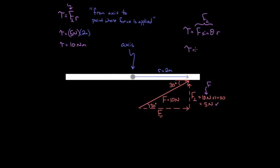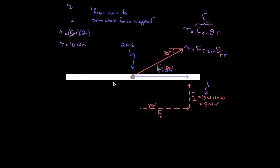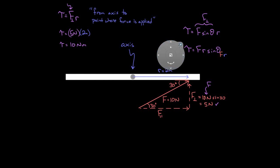In most textbooks you'll see torque written as F times R times sine theta. You plug in the entire 10 Newtons for force and the entire two meters for R, and theta is the angle between the force vector and the R vector — that's crucial. To find that angle, identify the direction of F and the direction of R. The safest way is to imagine moving the F vector so its tail is at the tail of the R vector, then find the angle between them. Using alternate interior angles again, that gives 30 degrees — that is the angle between F and R.